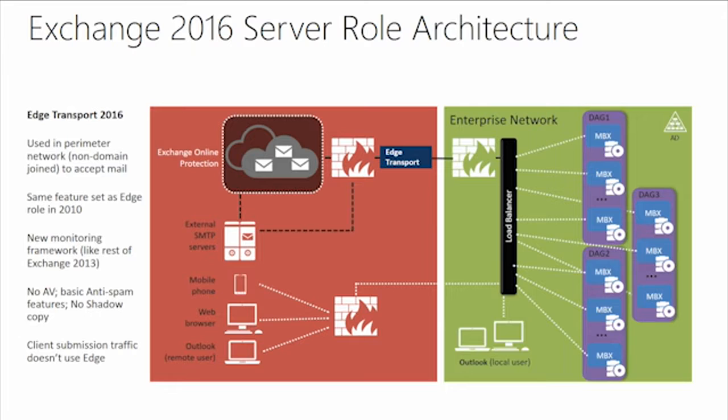The edge server accepts messages from the internet, checks them for spam, makes sure they are clean emails, and sends them to the internal network. This server was designed to have a very low footprint of services. It's an Exchange server but it doesn't need to be part of the domain — in fact it should not be a member of your internal Active Directory domain, because you don't want somebody to hack this machine and gain access to your Active Directory domain. It can be a member of a domain used to manage servers in your perimeter network.